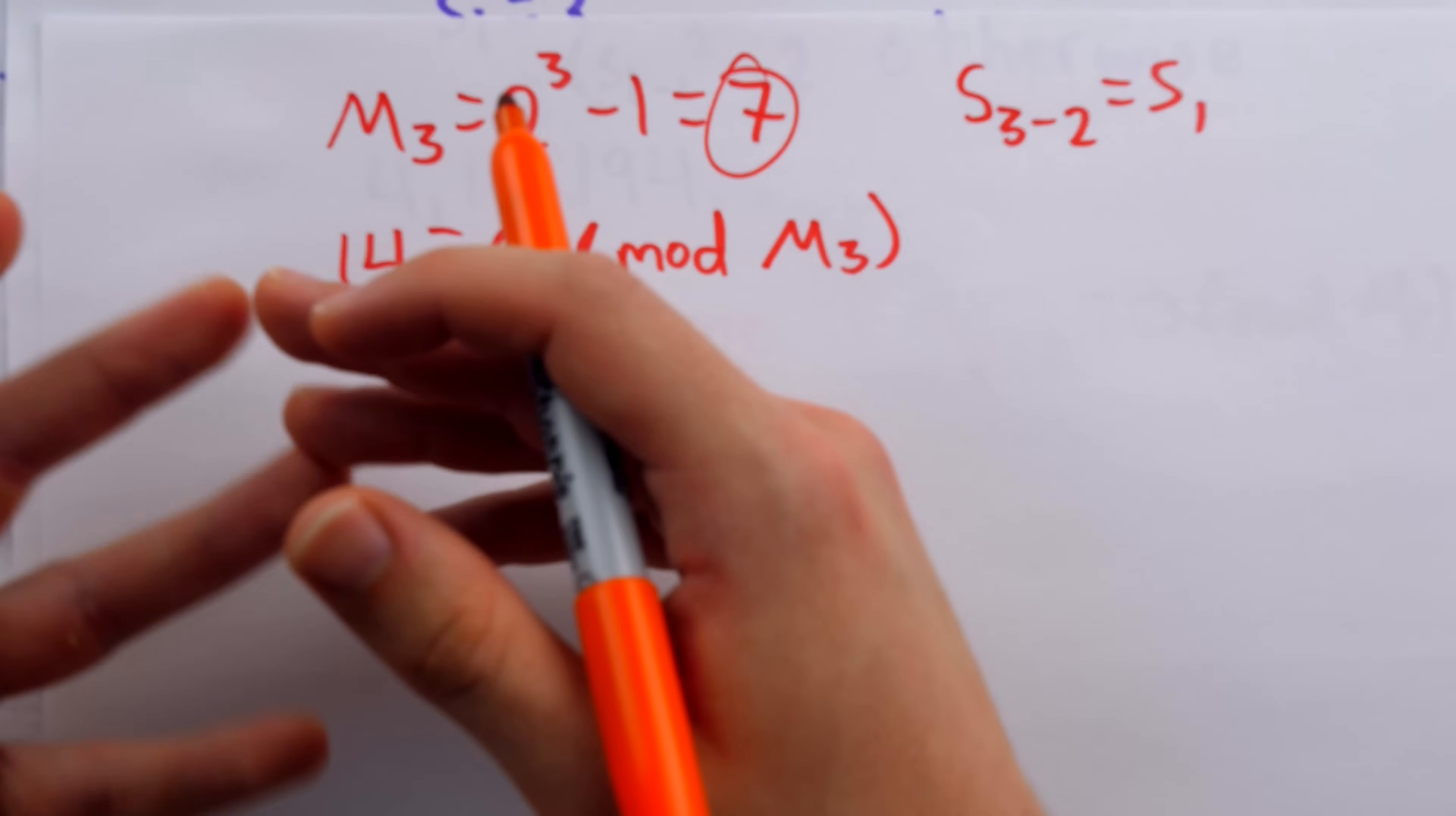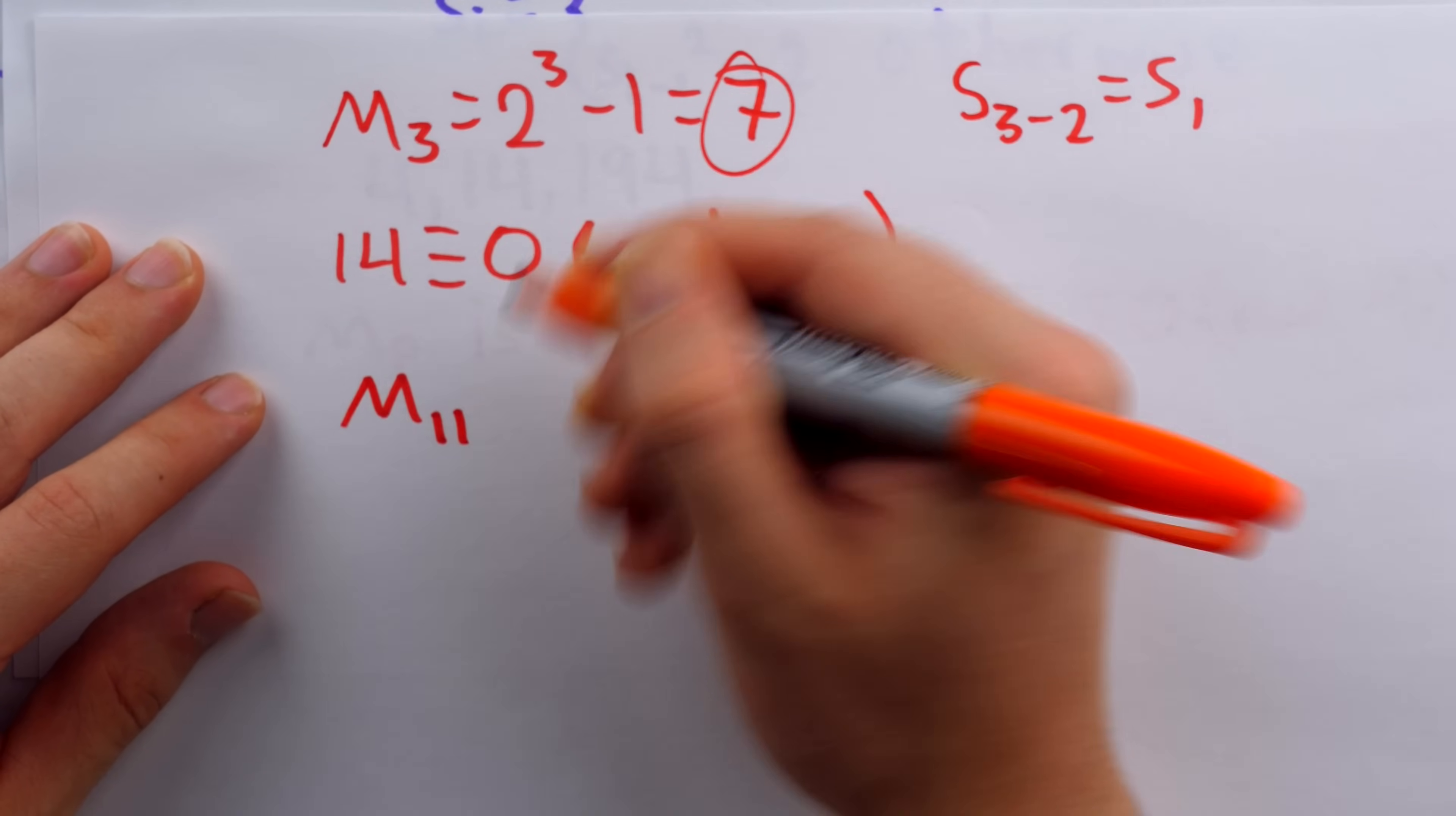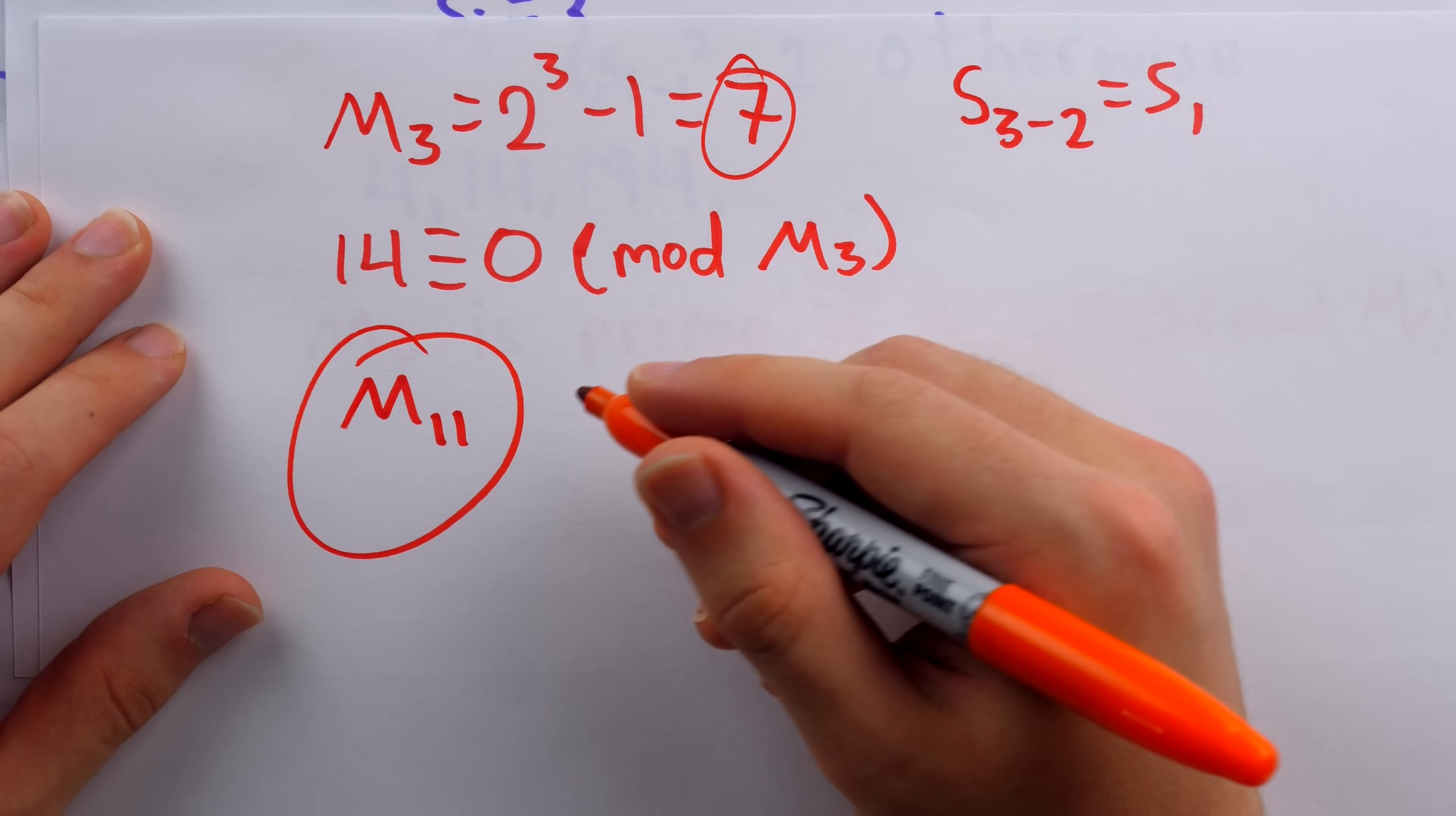Now, as we mentioned earlier, the first potential candidate to be a Mersenne prime, which fails to be a Mersenne prime, is M_11.